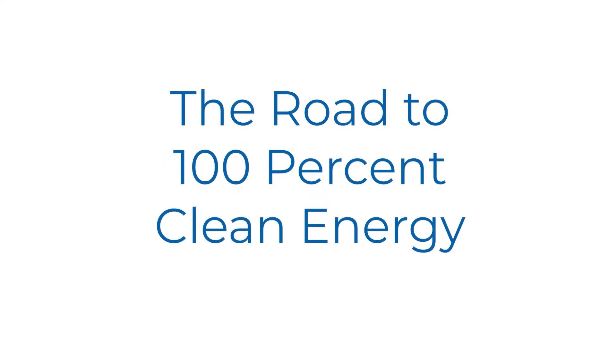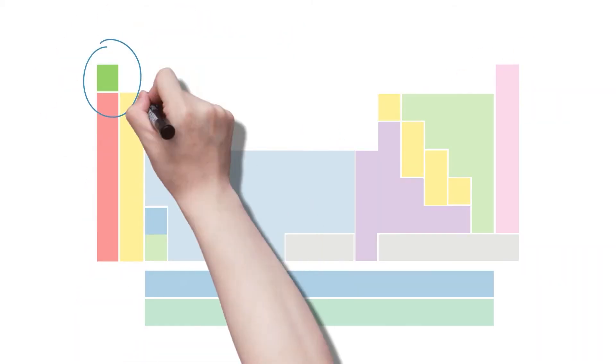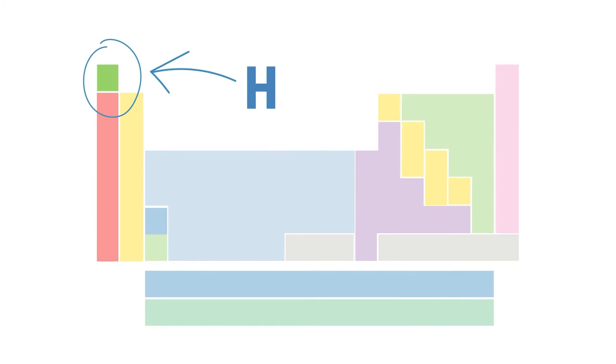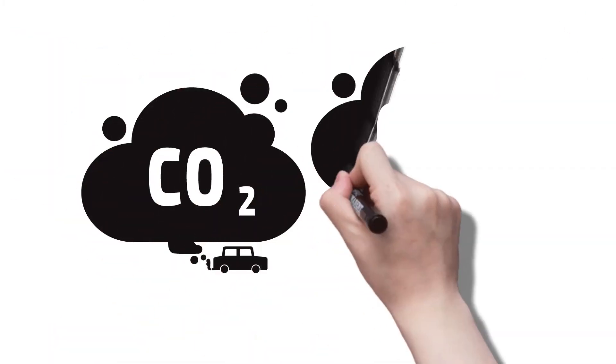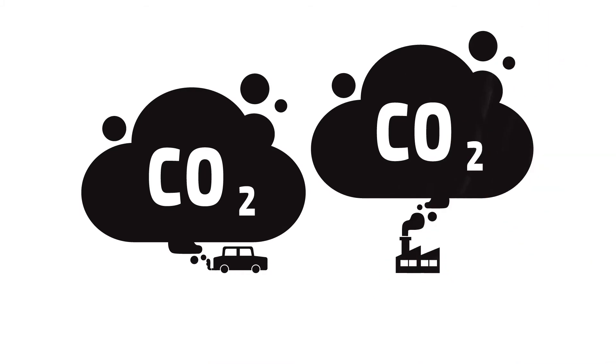A 100% clean energy future. That's something we all can agree on, but how do we get there? Turns out the answer is all around us. Hydrogen is the simplest and most abundant element in the universe. When used as a fuel, hydrogen produces none of the carbon dioxide associated with fossil fuels and climate change.